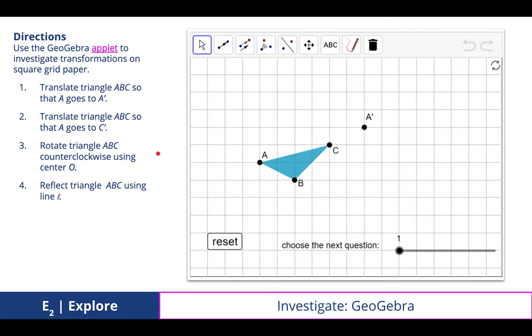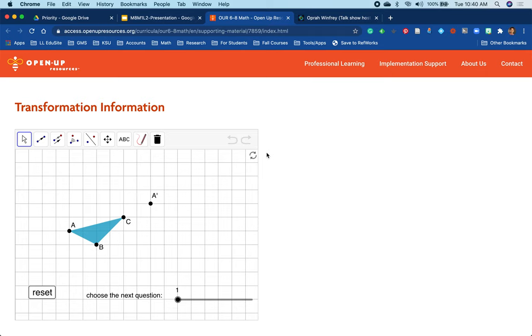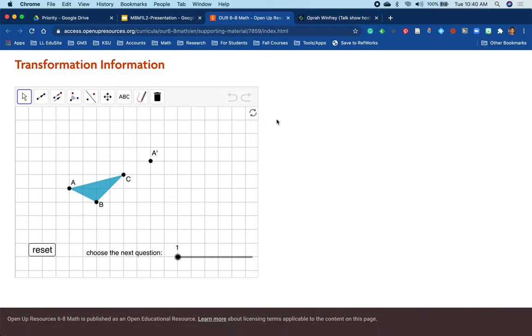GeoGebra is a great digital application that you could download or use on any browser. So I've included some applets here for you to be able to explore these different rigid transformations on either square grid paper, the isometric grid paper, and then extending that and digging deeper on the coordinate plane. So I want to show you a couple of these different commands here. So let's open the applet and let's explore.